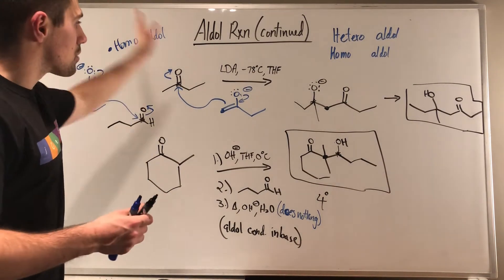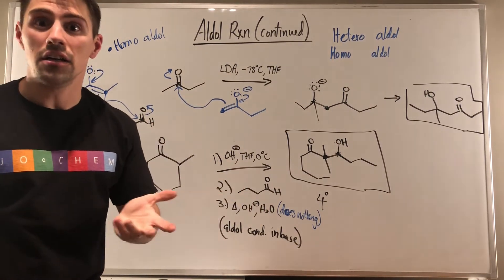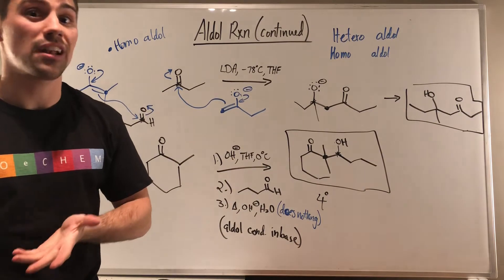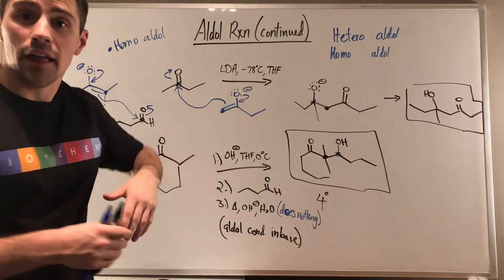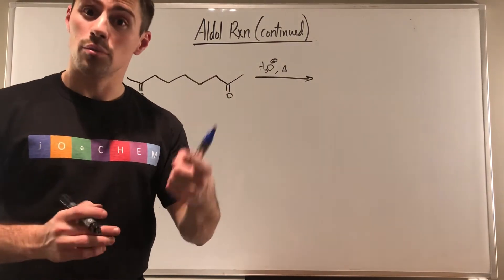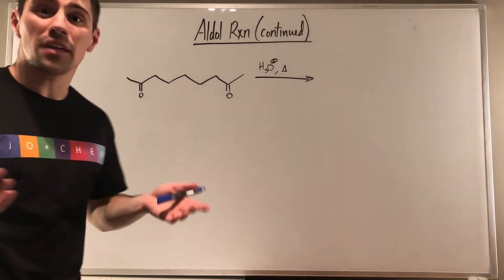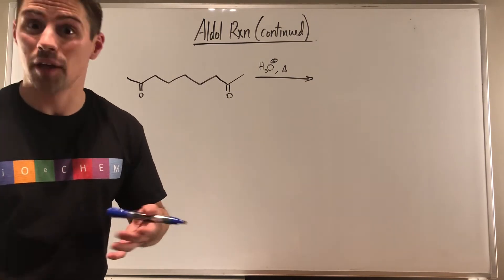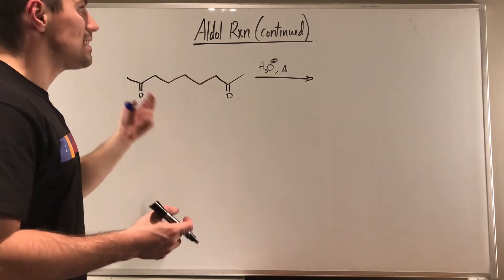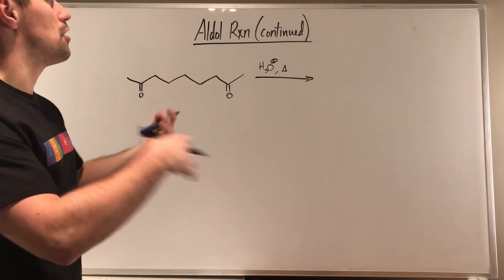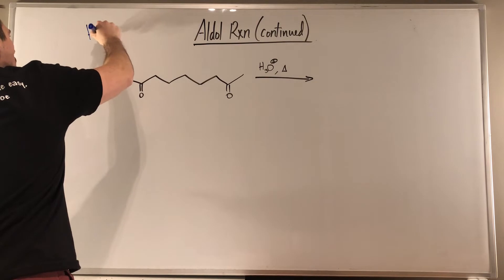I want to do one more example — a good question type we haven't covered: enols in an aldol condensation. So if you look at this problem: we have a diketone chain and just acid and heat. This is a perfect formula to do a homoaldol condensation, because we're in acid so we have to work with enols. And remember, when we work with enols — because they're not that nucleophilic — the thing that drives condensation to completion is the production and loss of water at the end.